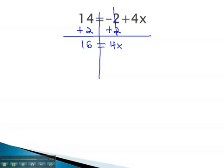Now, to get the x alone, right now we have 4 times x, the opposite of multiplying is dividing. To get rid of the 4 and leave x alone, we divide out the 4 on both sides. The 4's divide out, and we're left with x equals 16 fourths, or 4.